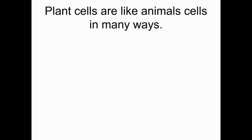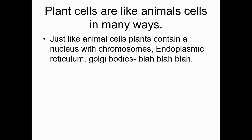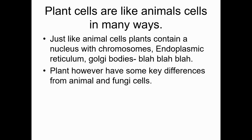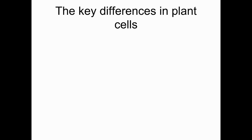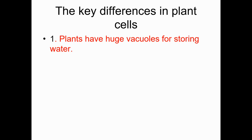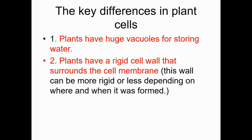Plant cells are just like animal cells in lots of ways — they have a nucleus, chromosomes, and all those inner organelles. But we want to know how they're different. The key differences: plants have really big vacuoles, like a baggie inside the cell that holds a ton of water, because water is super important for plants. And they have a rigid cell wall that surrounds the cell membrane.